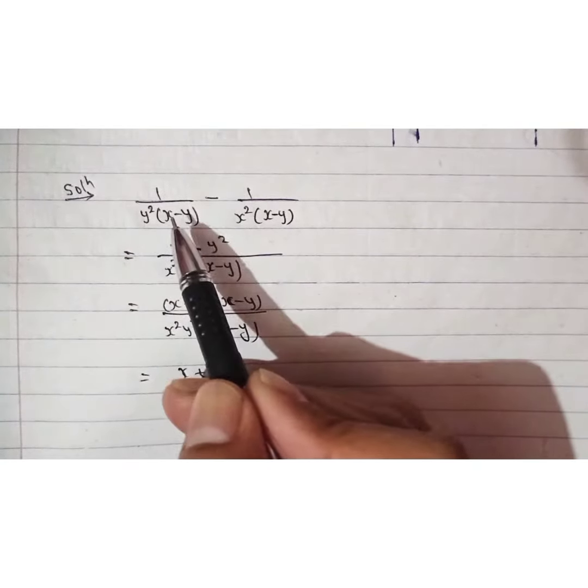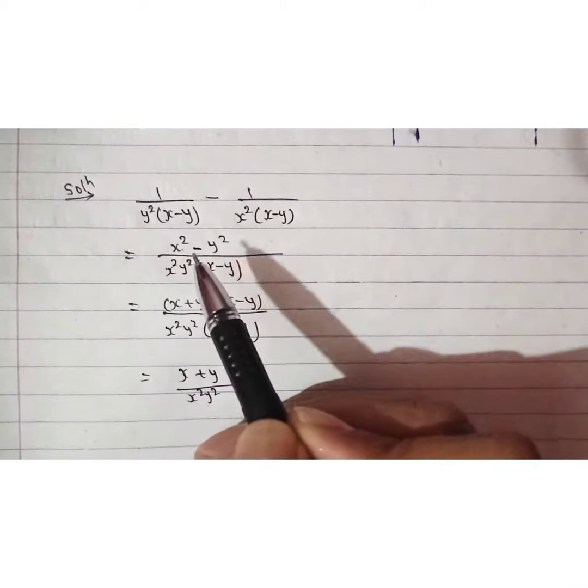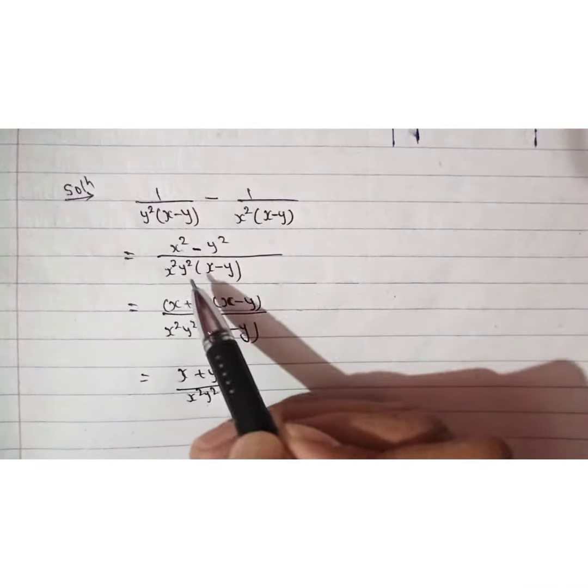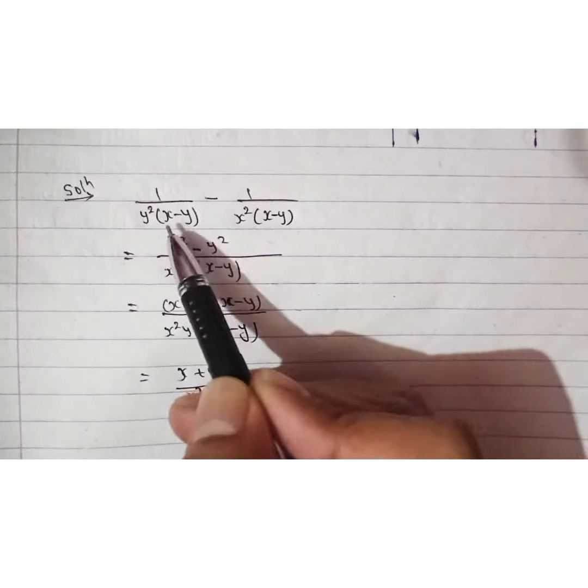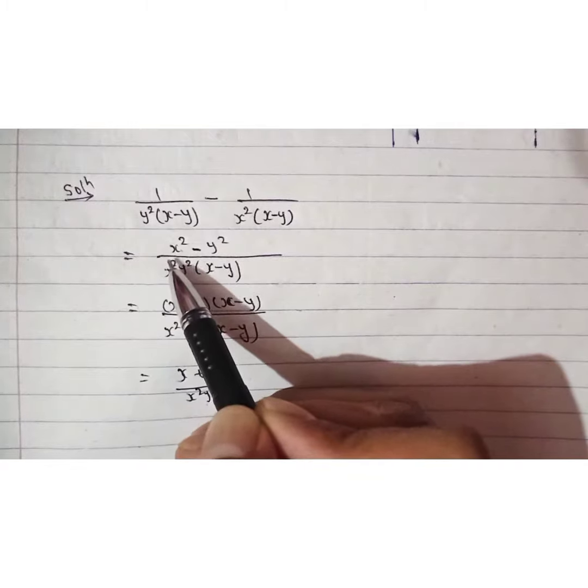After taking the LCM, divide this denominator by this denominator and multiply the quotient by this numerator. If you divide this by this, then y²(x-y) gets cancelled and you get x².